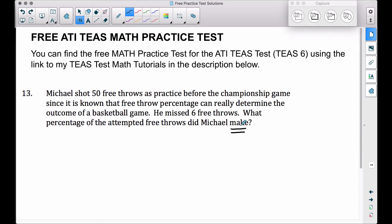Well, if he shot 50 free throws and he missed six, he made 44. Now we're trying to find a percentage - he made 44 out of 50.